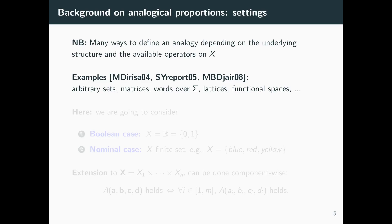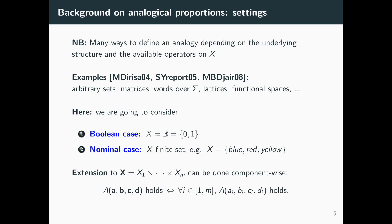There are several examples of different sets X: X could refer to arbitrary sets, to matrices — as mentioned in the NLP application — to words over a given alphabet, or to instances of structured sets such as lattices or functional spaces. In this talk, we focus on two particular cases: the boolean case, and its generalization, the nominal case, where analogies are defined over a finite set X.